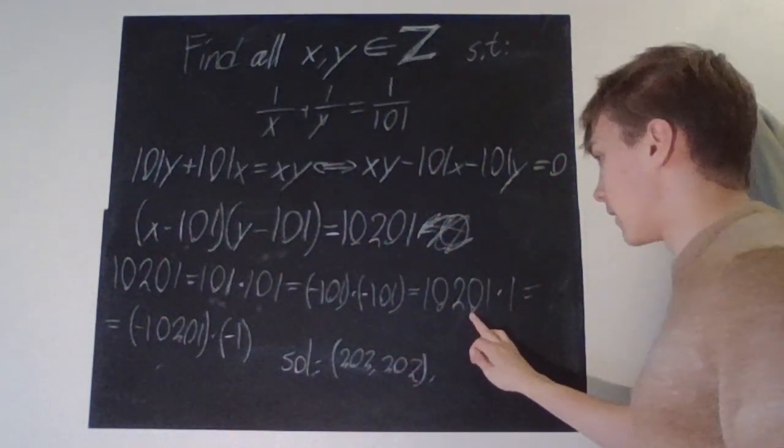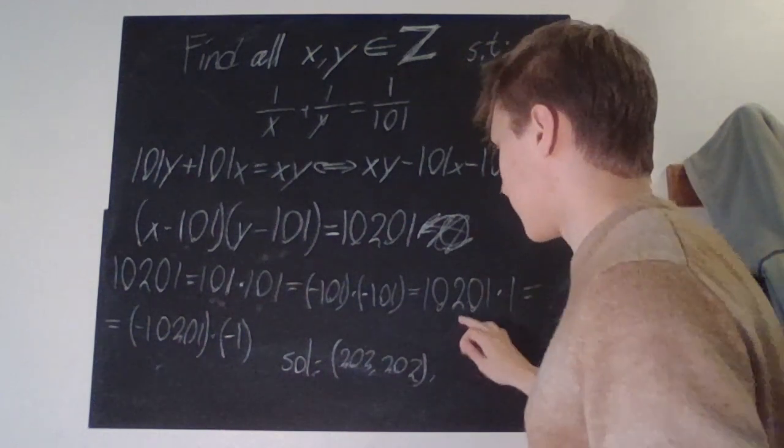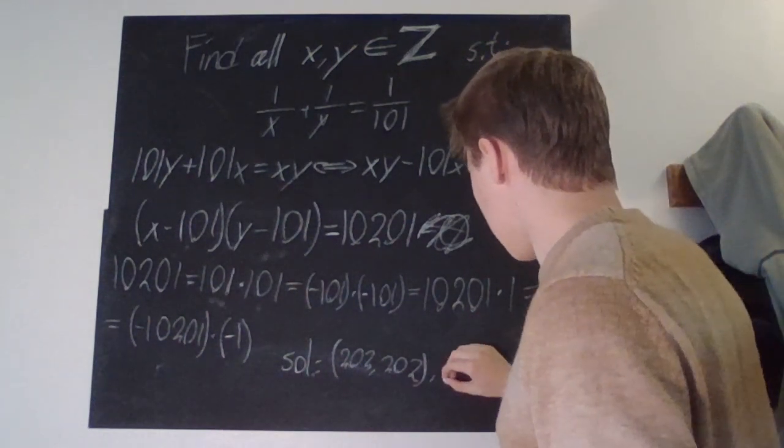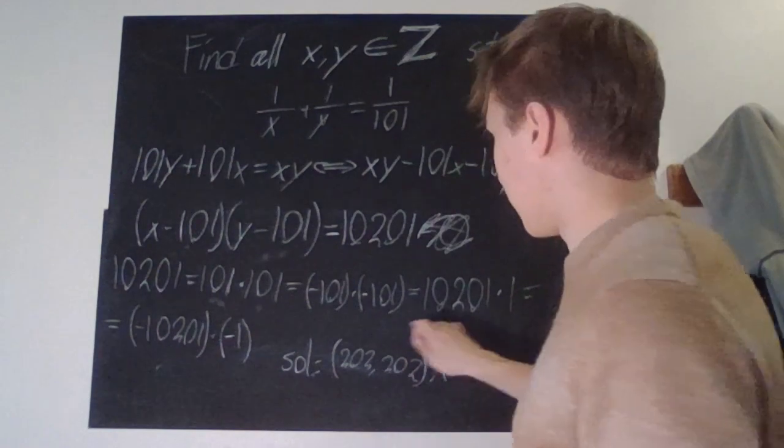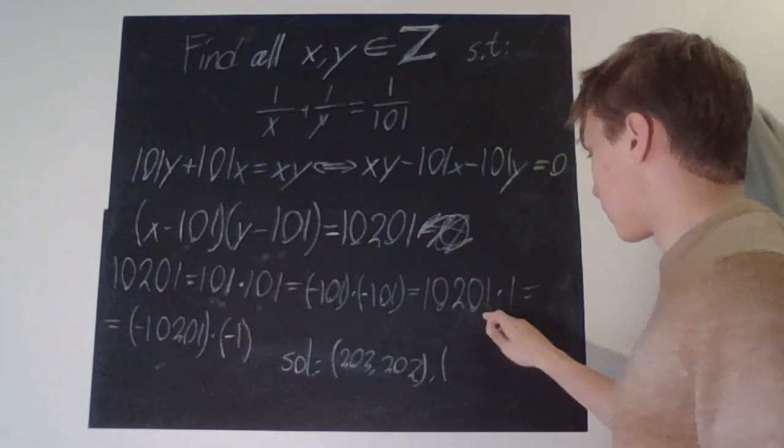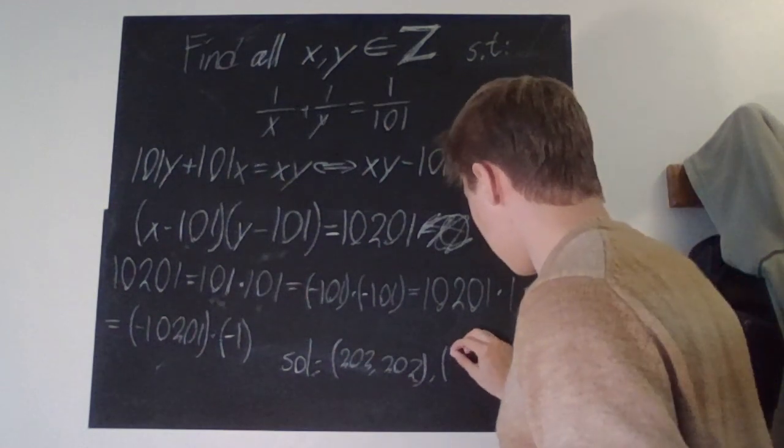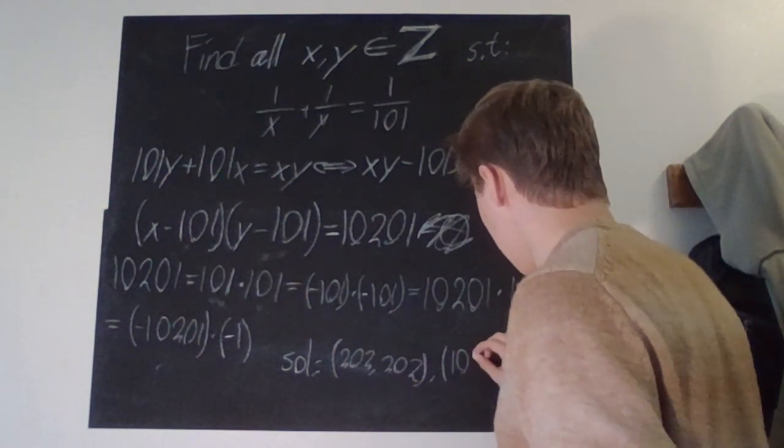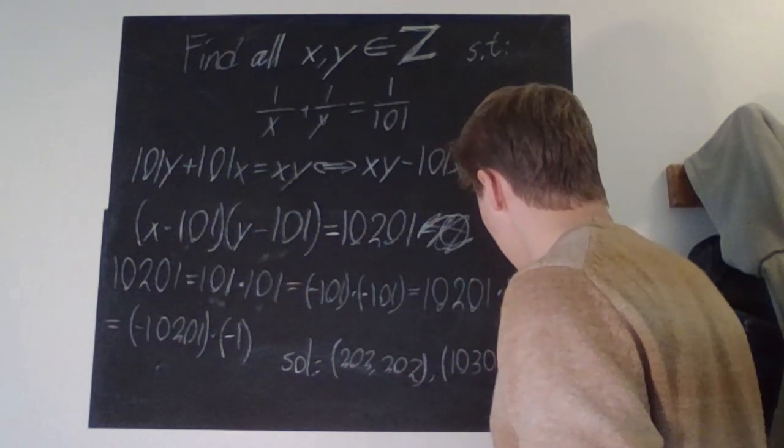And then we'll look at this. So, this works perfectly fine. So, then we have that x - 101 is supposed to be 10201. So, we have that the answer is 10302.